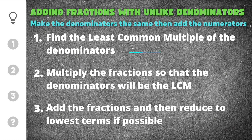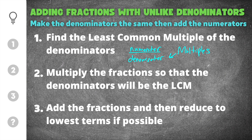When we look at a fraction, the number on top is called the numerator and the number on the bottom is called the denominator. We're looking for the smallest number that both denominators go into. The easiest way to do that is to list out the multiples of the denominators until you get a number that both go into — that will be the least common multiple.